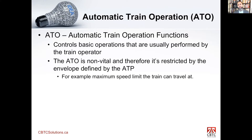ATO — Automatic Train Operation — these functions basically control the entire train. They control the acceleration, the propulsion, and the braking of the system. They take control of the train functions that are usually performed by the operator. However, ATO is a non-vital function, which may seem odd — how is it that an ATO controlling a 50-ton train is considered non-vital?